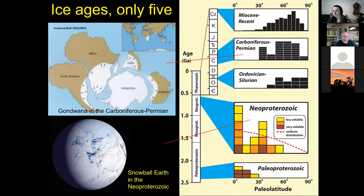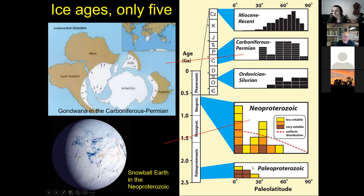Ice ages are controlled more than anything else by plate tectonics — when we have enough landmass near either or both poles, we can get an ice age. The Earth has only had five ice ages: between 2.5 and 2 million years ago; the late Precambrian, roughly 600-700 million years ago; the Ordovician and Silurian when Rhodes Fairbridge discovered glacial features in the Sahara Desert; the Permo-Carboniferous Ice Age in which all the southern continents including India were glaciated; and of course the ice age of the last few million years.